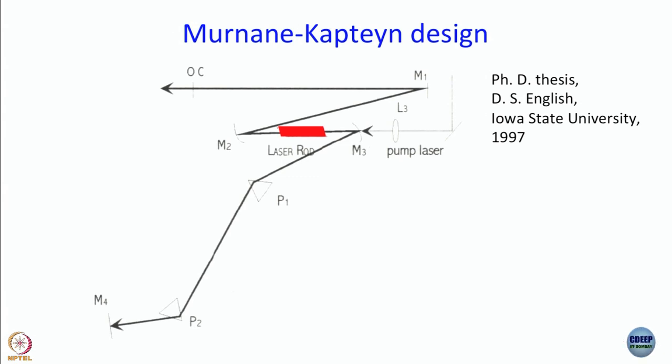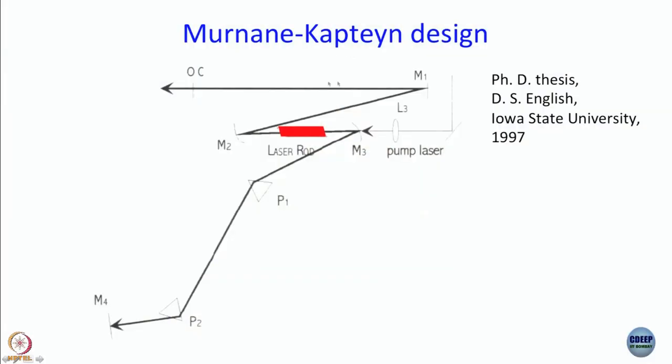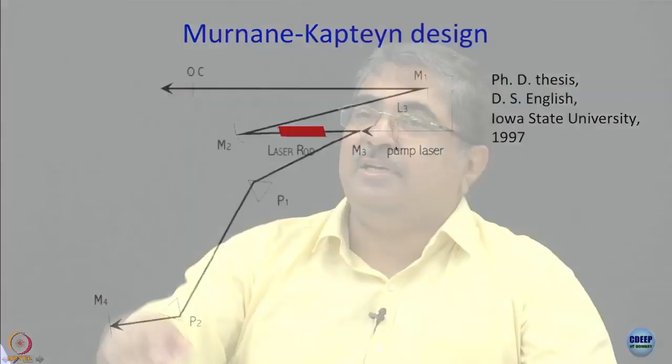The Ti:sapphire laser always starts operation in CW mode because it is a four-level laser. You need to introduce some disturbance in the cavity to kick-start pulsed operation. In the original open-cavity design, you would physically tap a mirror slightly to start mode locking. This figure is from the PhD thesis of D.S. English, now a professor in the US.